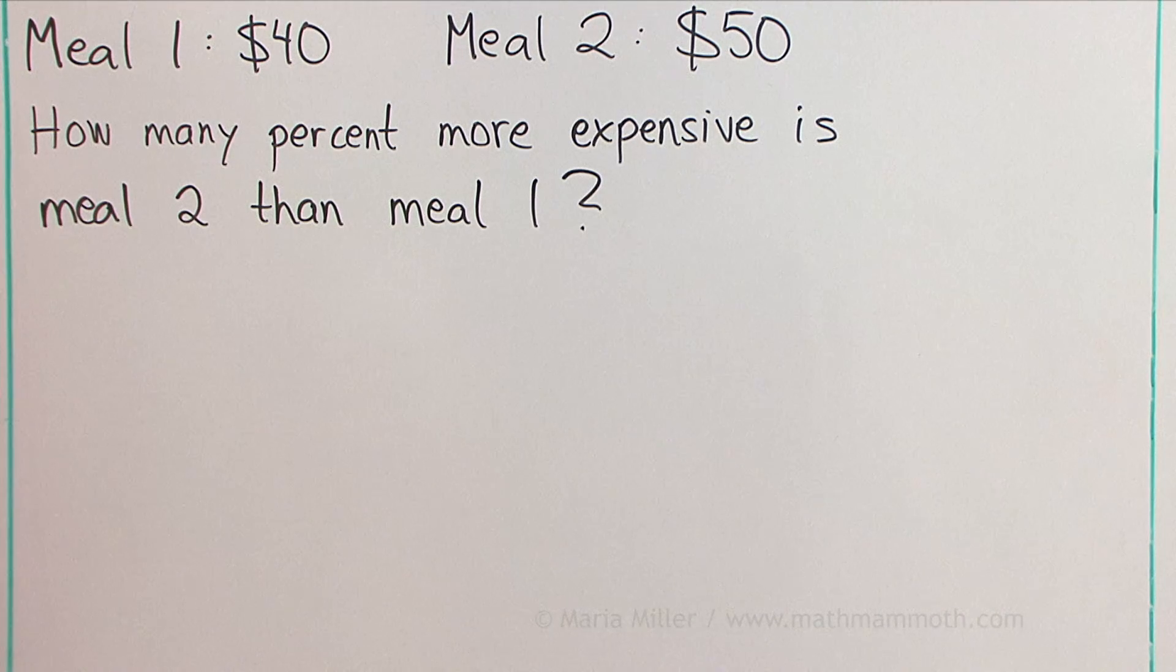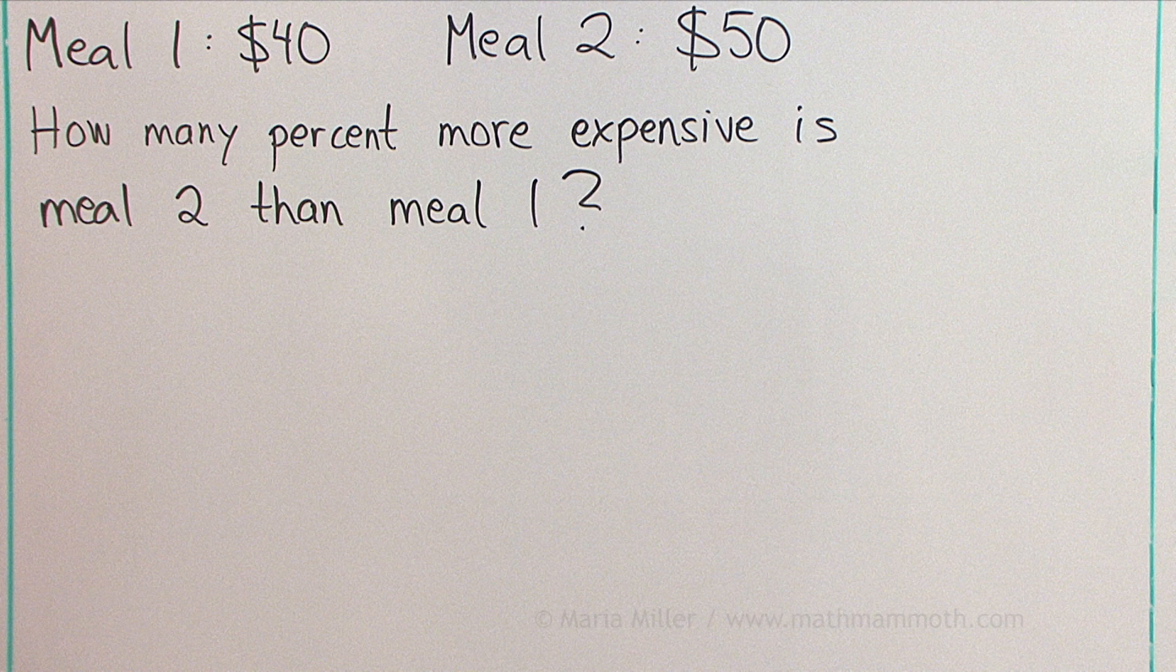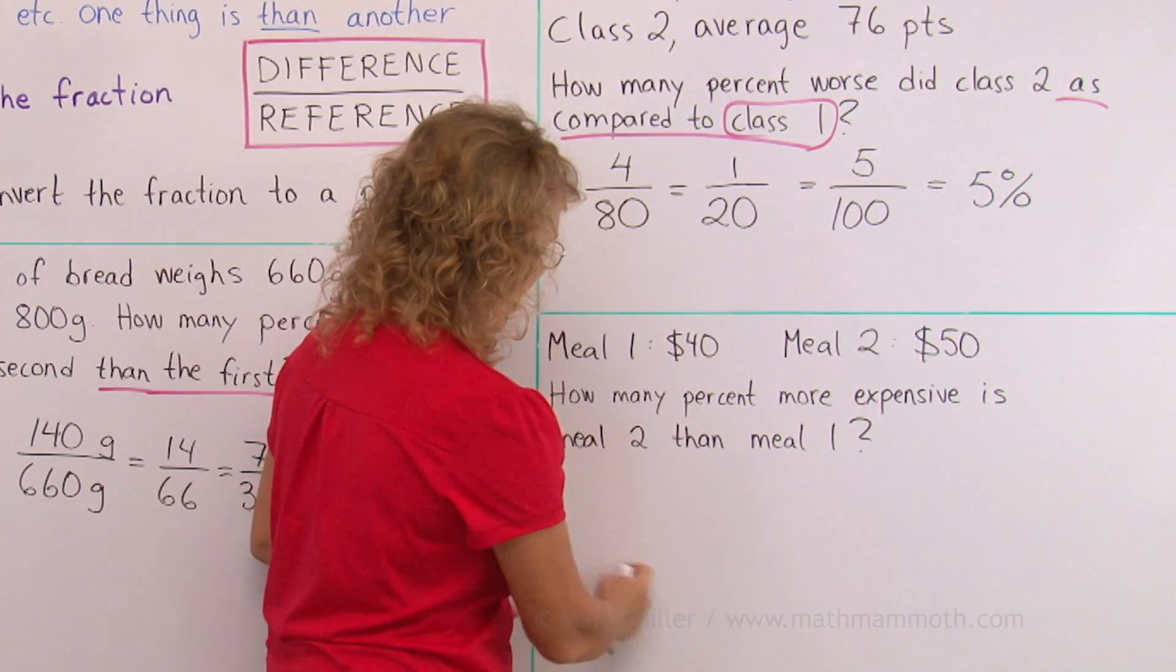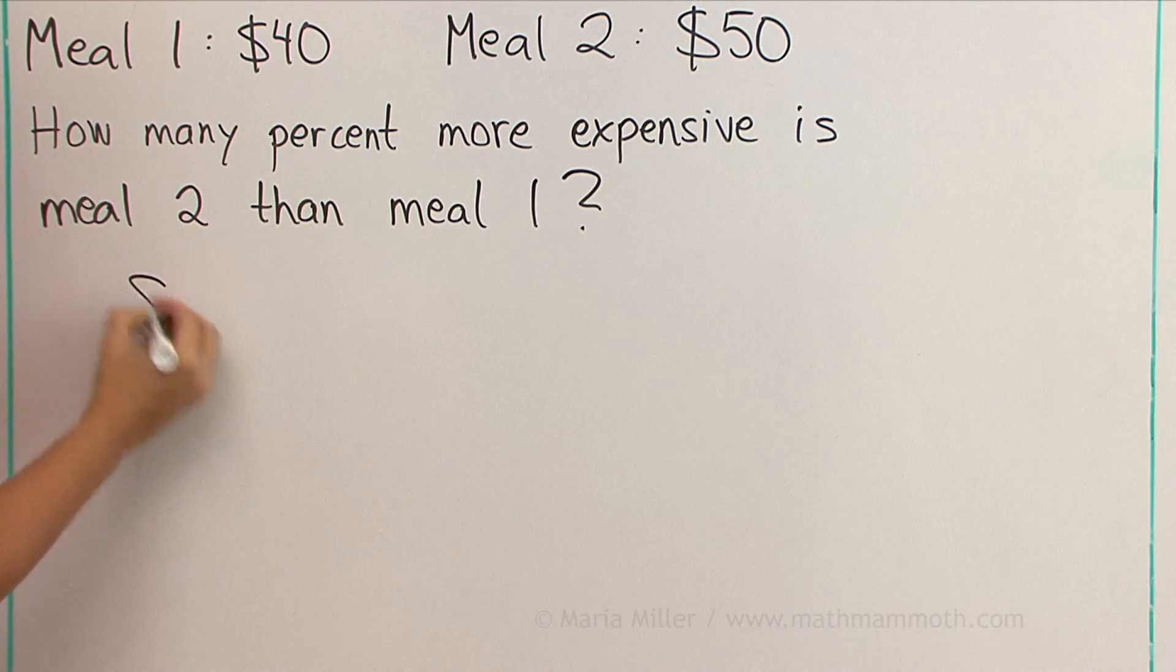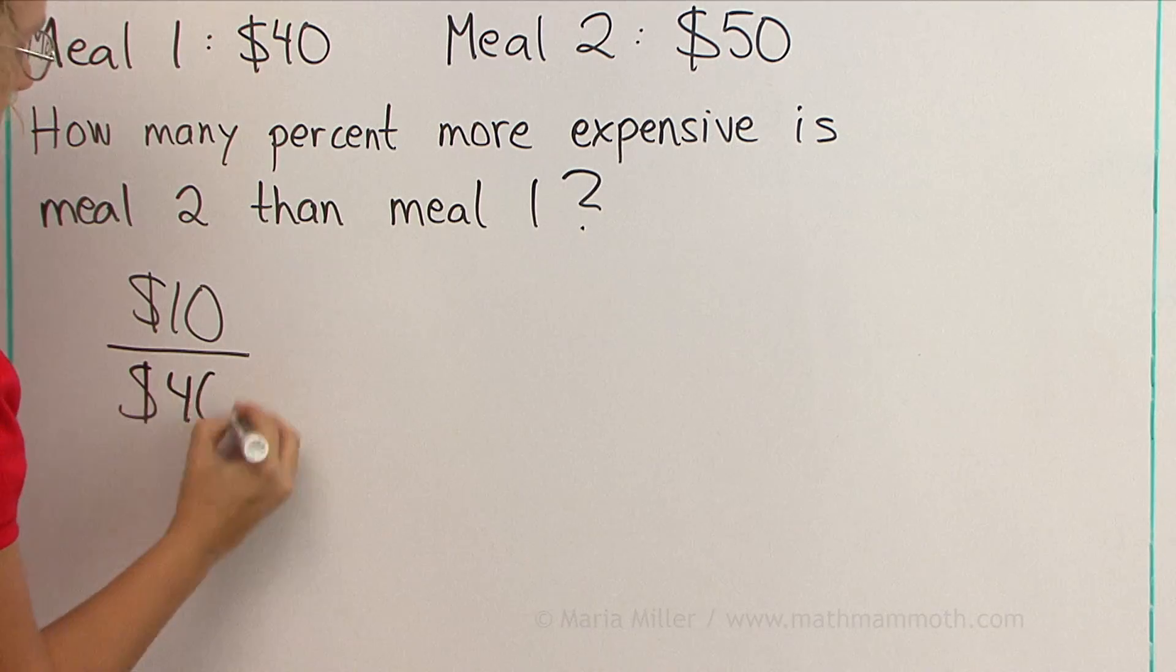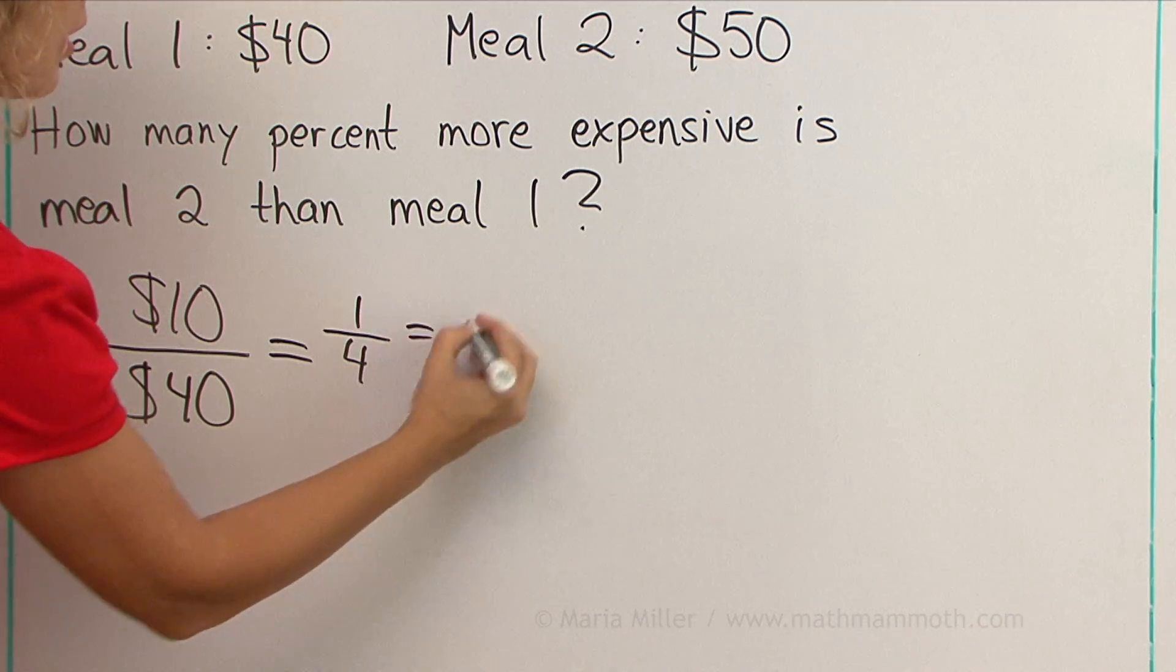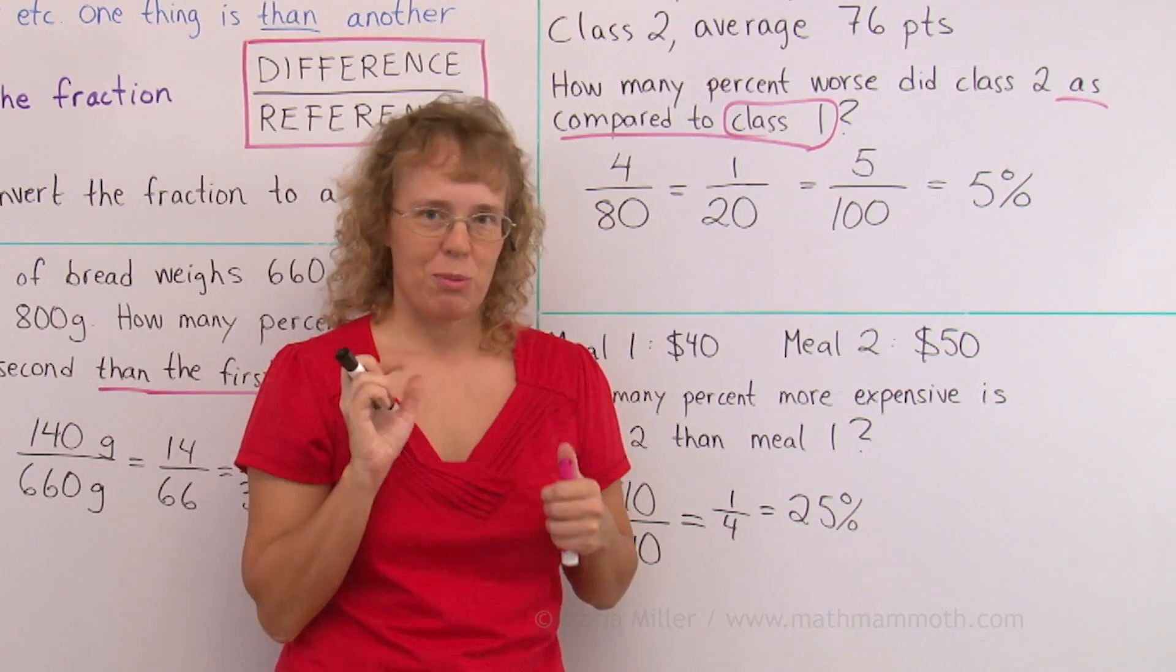Okay, now let's look at it. We need our fraction here. The difference, the actual difference in the prices, is 10 dollars. The other meal is 10 dollars more expensive. And then we compare that difference to meal 1, 40 dollars. This one is easy, right? 10 over 40 is 1 fourth, which is 25%. Now I'm going to change the problem on you.